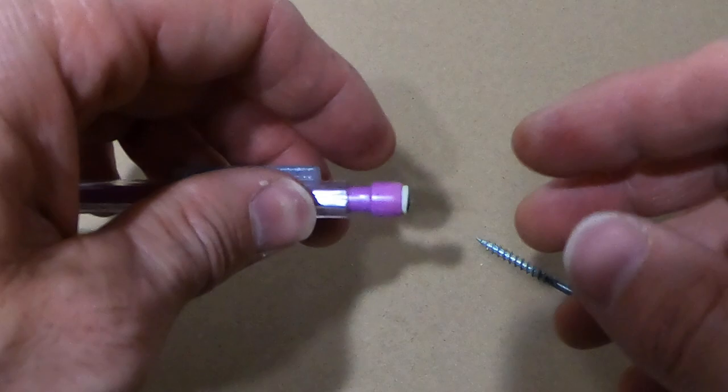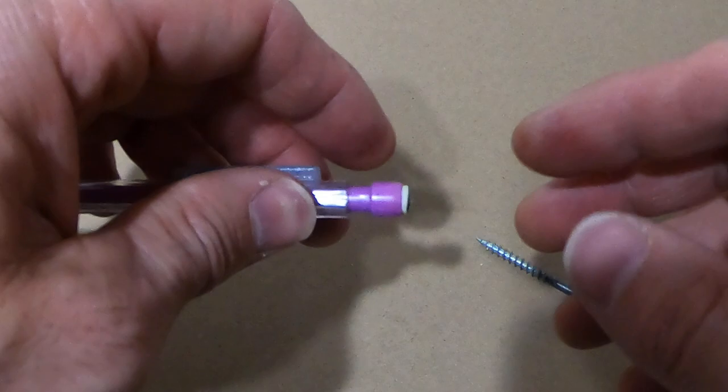You just get your trusty screw and take it out again. So that's how to add some lead to your pencil if the eraser is stuck in there and you can't get it out. Thanks for watching everyone, have a great day.